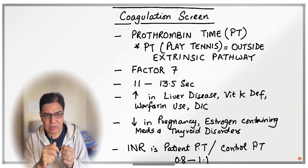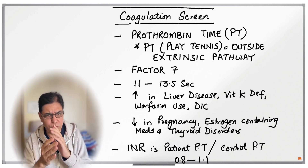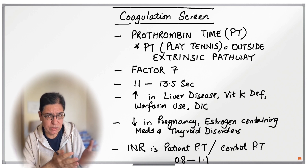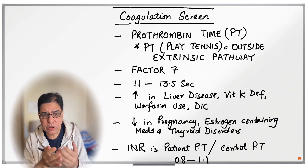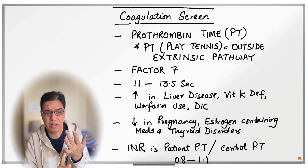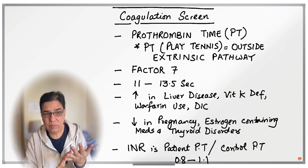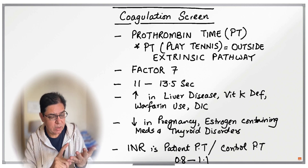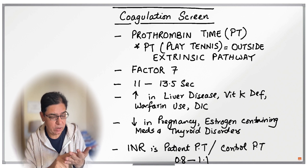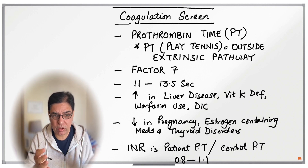Since isolated factor 7 deficiency is very rare, most of the time PT is raised because of a generalized deficiency of clotting factors. This usually stems from one of the following: liver disease, or disseminated intravascular coagulation (DIC).